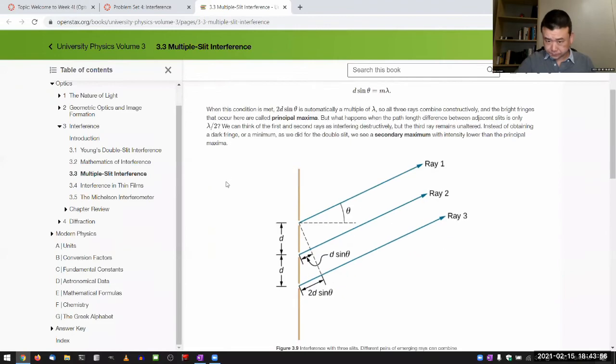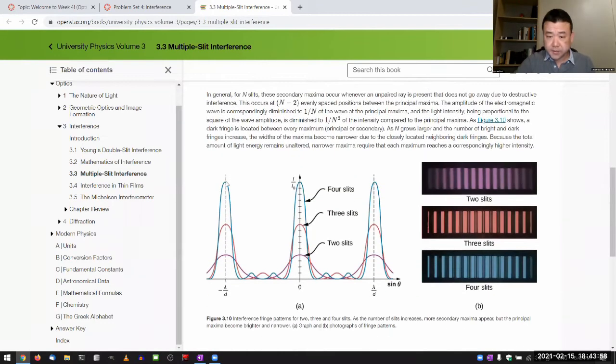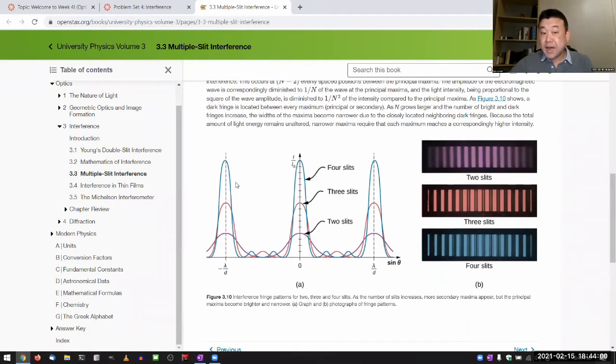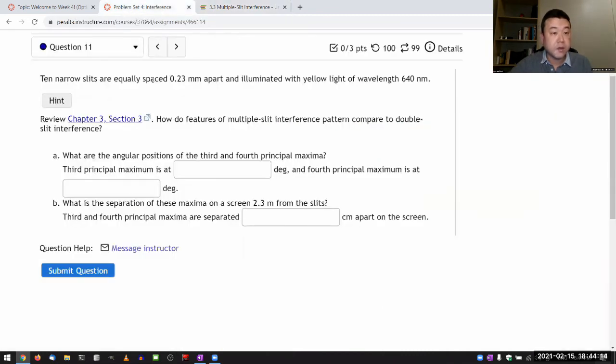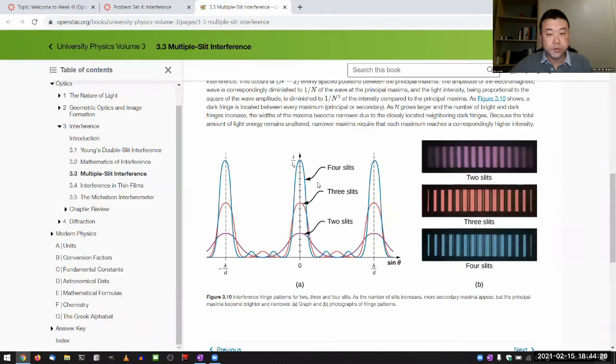When you look at multiple-slit interference, one thing that is nice is that the position of what we call the principal maxima don't change. These are determined by constructive interference between neighboring slits. So as long as you have the distance between neighboring slits, then the conditions that produce the principal maxima don't change.